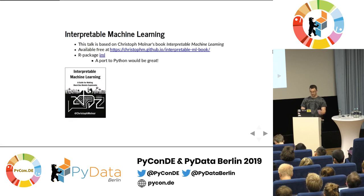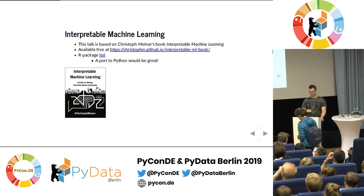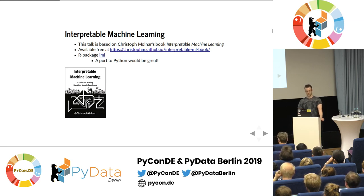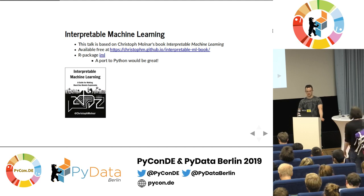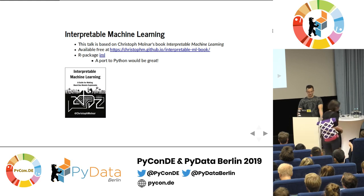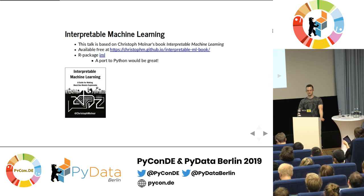This talk is mainly based on the book 'Interpretable Machine Learning' by Christoph Molnar. It is available for free, and there is also a paper copy I can recommend greatly. Christoph has also written an R package accompanying this book called IML, which implements many of the methods described in the book. If you're looking for open source contributions, a port of this package to Python would be very helpful.